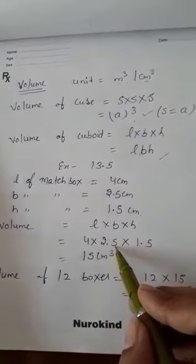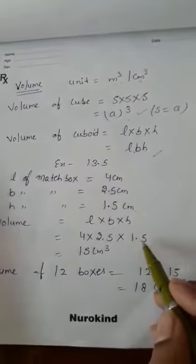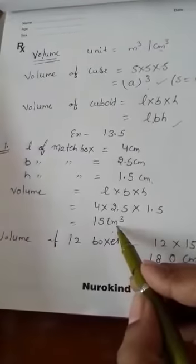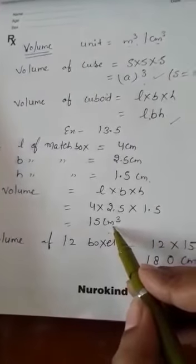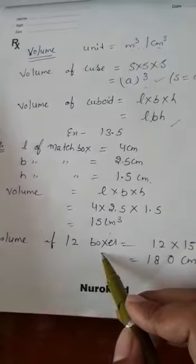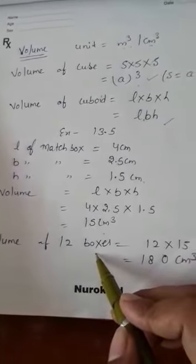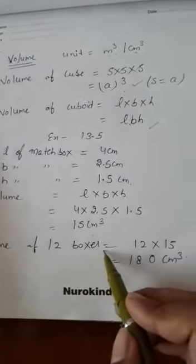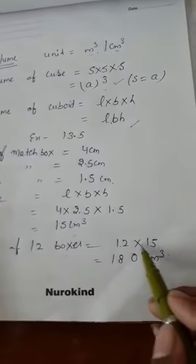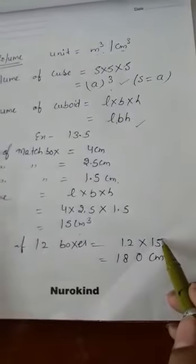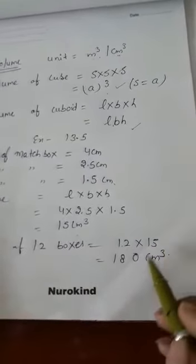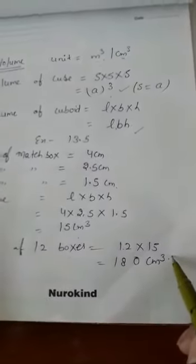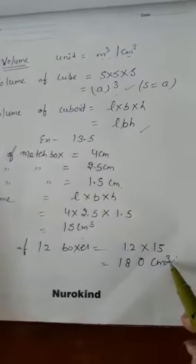4 multiplied by 2.5 is 10, and 10 multiplied by 1.5 is 15 cubic centimeters. So this is the volume of one box. Now we have to find the volume of a packet containing 12 boxes. Volume of 12 boxes = 12 × 15 = 180 cubic centimeters. This is the answer to our first question.